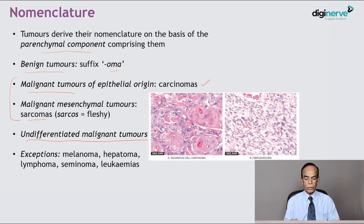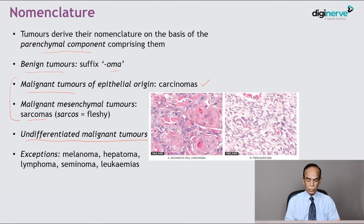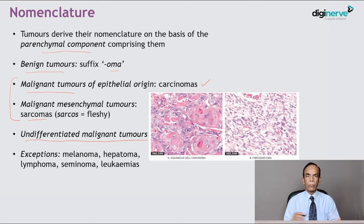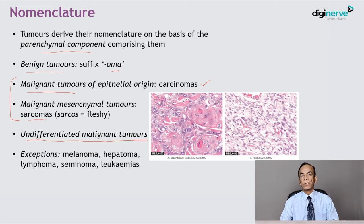There are exceptions to this generalisation. Melanoma is a malignant epithelial tumour arising from melanocytic cells, although it ends in OMA. Hepatoma is synonymous with hepatocellular carcinoma — a malignant tumour of hepatocytes. Lymphoma is a malignant lymphoid malignancy. Seminoma is a malignant tumour arising from seminiferous cells. Leukemia is the term used for malignant tumours of the leukocytic series. These are exceptions where terms used for malignancy differ from usual terminology.